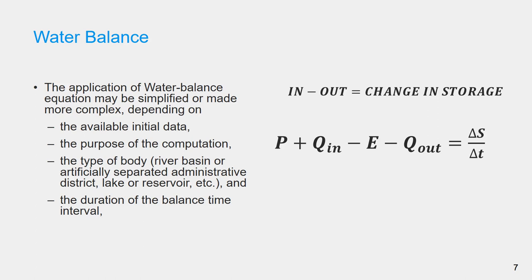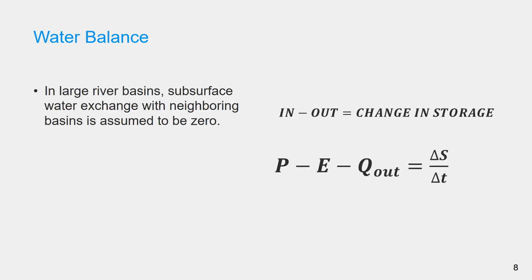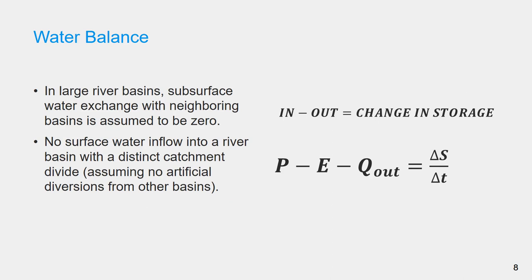Are we computing the water balance for a yearly water balance? In large river basins, subsurface water exchange with neighboring basins is assumed to be zero. No surface water inflow into a river basin with distinct catchment divide, of course assuming no artificial diversions from other basins. In this case, the water balance equation is simplified as precipitation as the only inflow and evapotranspiration and the discharge out of the basin as outflow components.